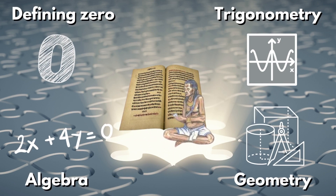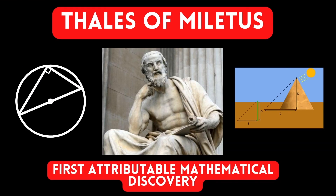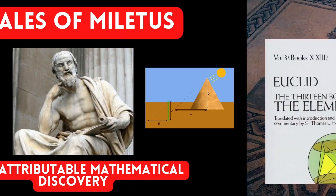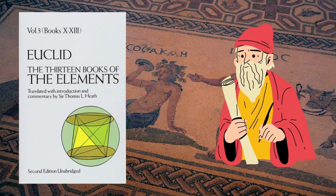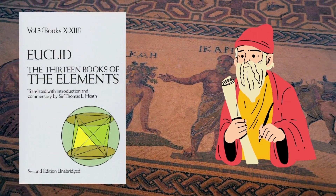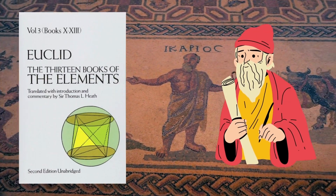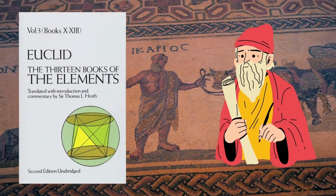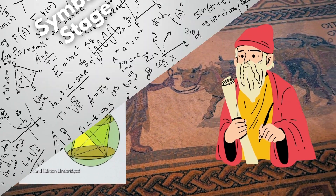We also see examples of syncopated mathematical notation through the works of mathematicians such as Thales, who is often regarded as the first mathematician, and Euclid, whose work on geometry led him to become the author with the greatest longevity in history.